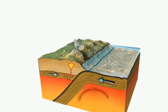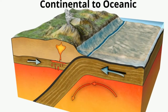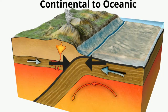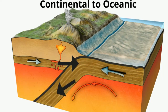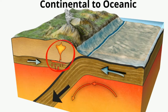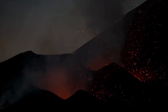Next you have continental to ocean collisions. When a plate of ocean crust collides with a plate of continental crust, the ocean crust is more dense and subducts, or goes underneath the continental crust. The magma from the melted ocean crust rises to the surface, and this results in volcanoes along the boundary.